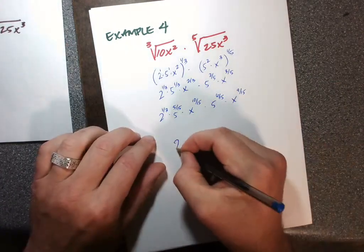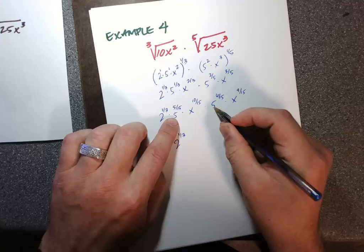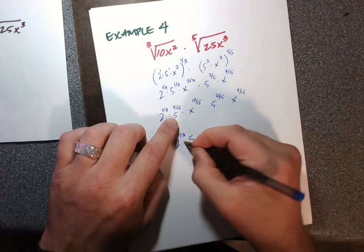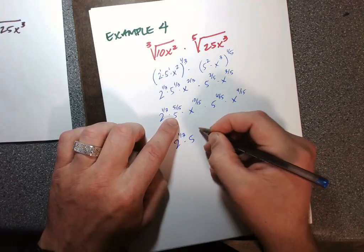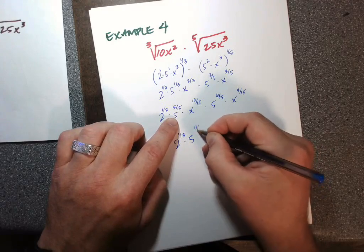The 2 is the same thing. The fives: how many factors of 5? Well, we've got almost a whole factor here, and then the x's.